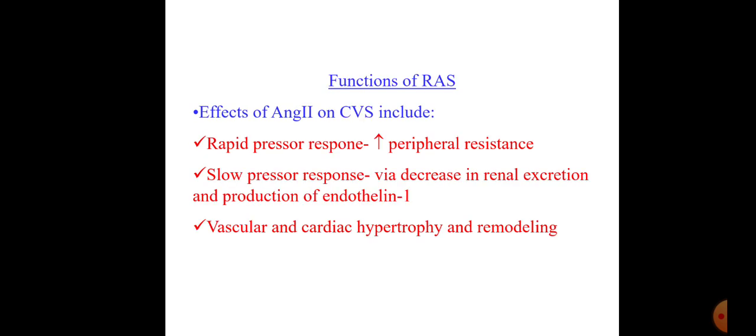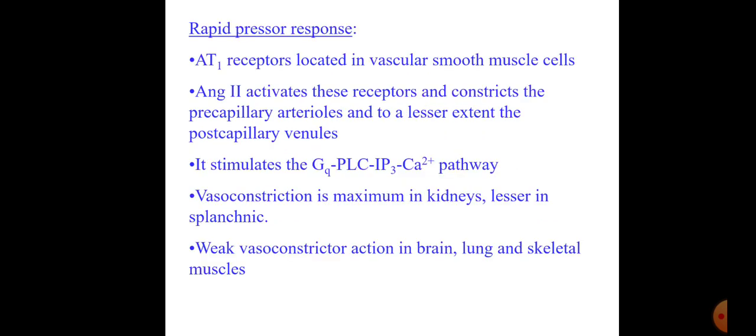The functions of the RAS and effects of angiotensin 2 on the cardiovascular system include a rapid pressure response — increasing blood pressure by increasing peripheral resistance via vasoconstriction, mainly through angiotensin 2 acting on AT1 receptors. There is also a slow pressure response done by decreasing renal excretion and production of endothelin-1. Endothelin-1 is actually a vasoconstrictor, so decreased endothelin production would not increase BP — rather there is vascular and cardiac hypertrophy and remodeling.